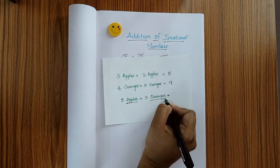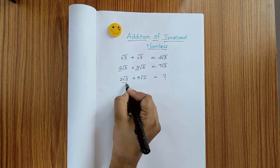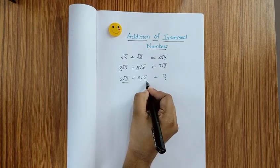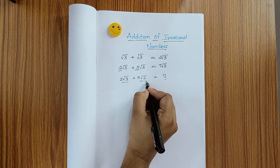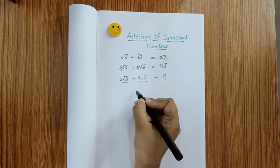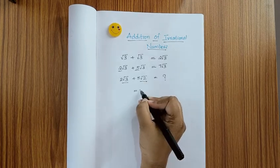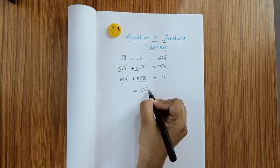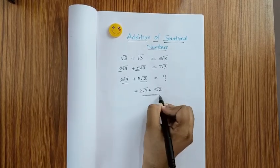Likewise, in our question, root 3 and root 2 are entirely different irrational numbers, so you can't add this. If you want, you can write the sum as 2 root 3 plus 5 root 2, same as the question.